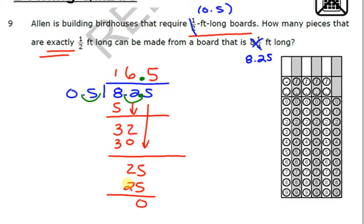Now, here's what is important. If you put 16.5 as your answer, it's wrong, because the key word here is how many pieces that are exactly half a foot can he make. He doesn't want the extra. He wants exactly half a foot. And so your answer is going to be 16. So you're going to bubble in 1 and 6. Very important that you read that.